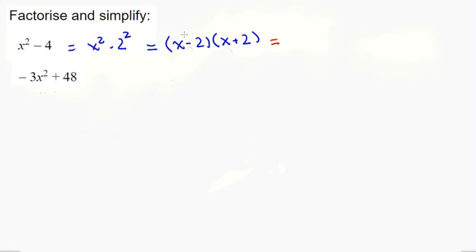Let me show you that this works. When you're factorizing, that's the answer, that's the final answer. What I'm doing now is showing you that it works. So x times x, that's x squared. x times 2, that's positive 2x. Negative 2 times x, that's negative 2x, and negative 2 times 2, that's negative 4.